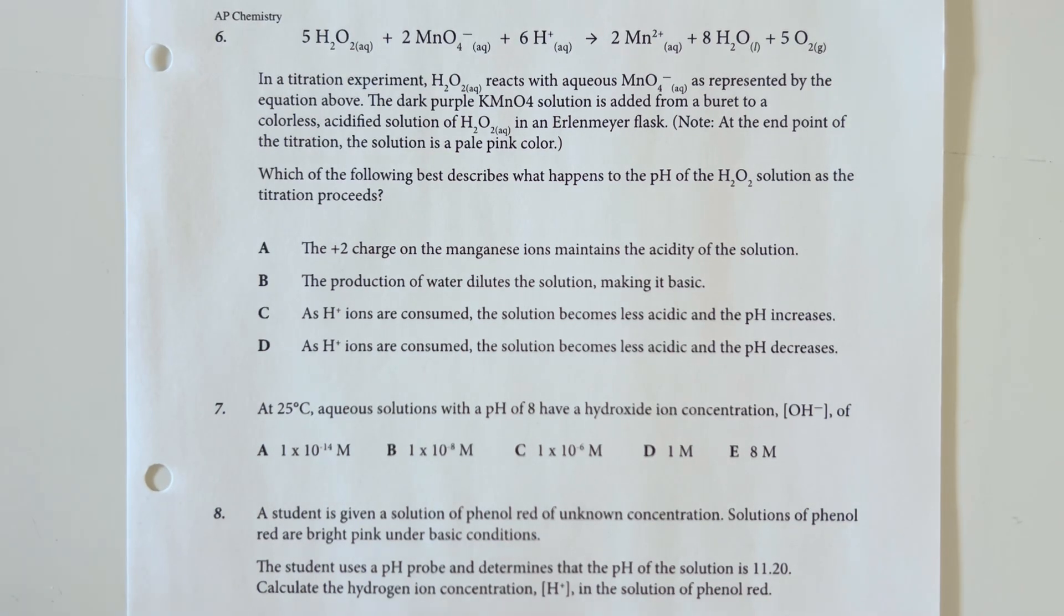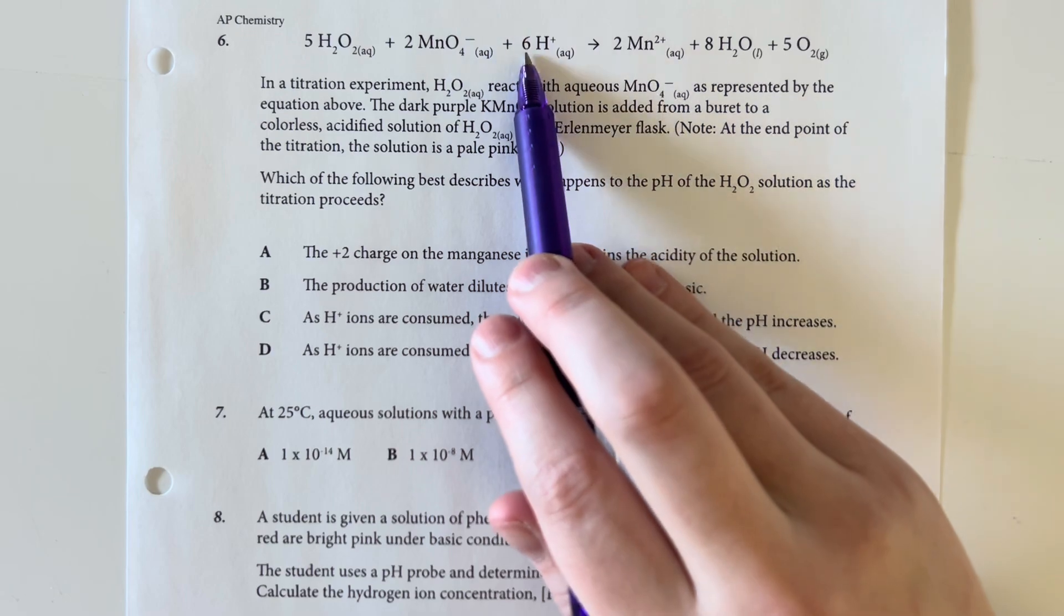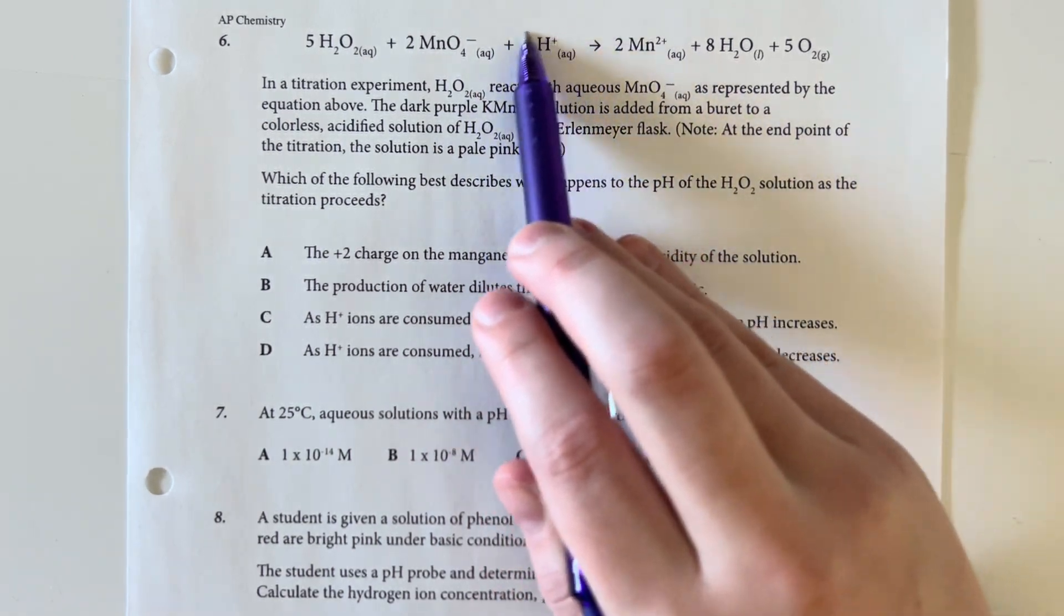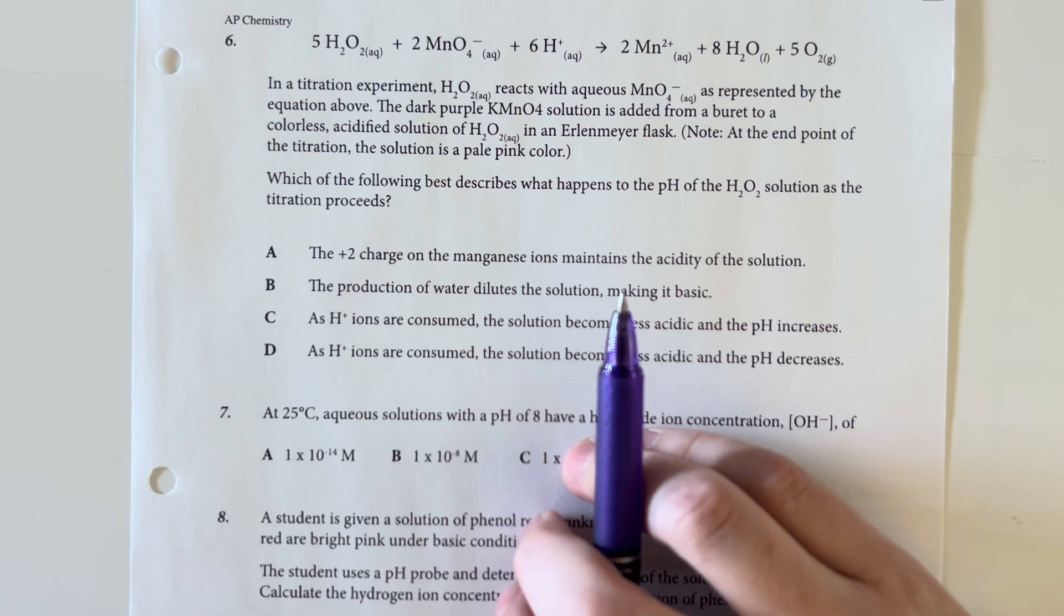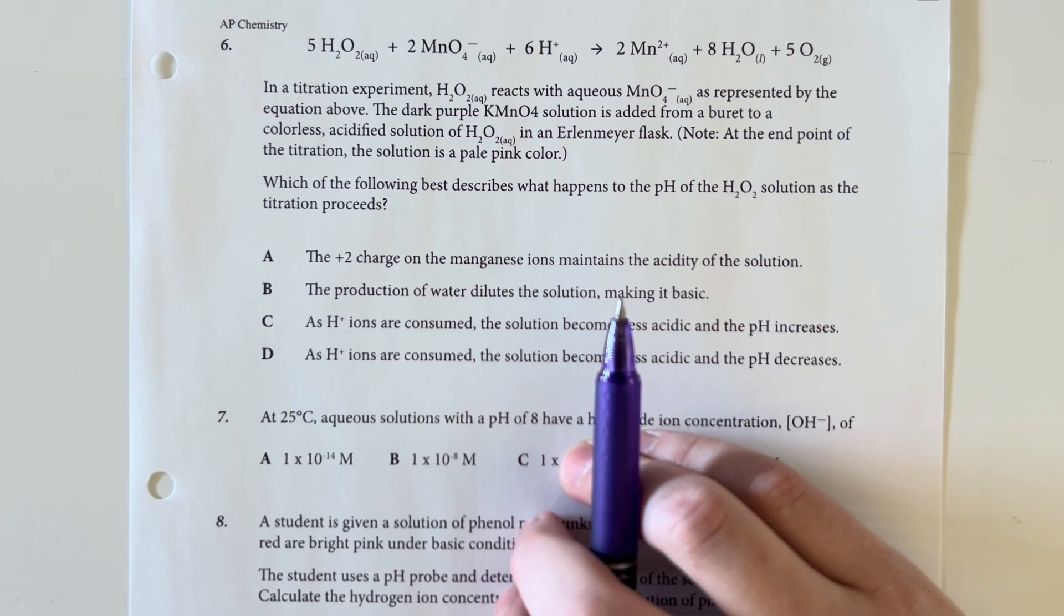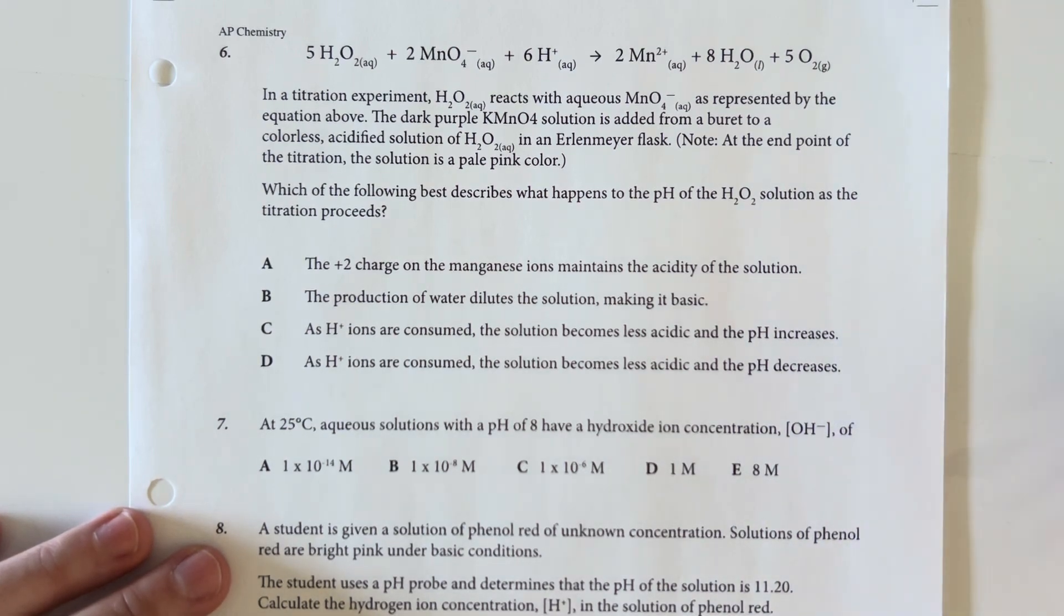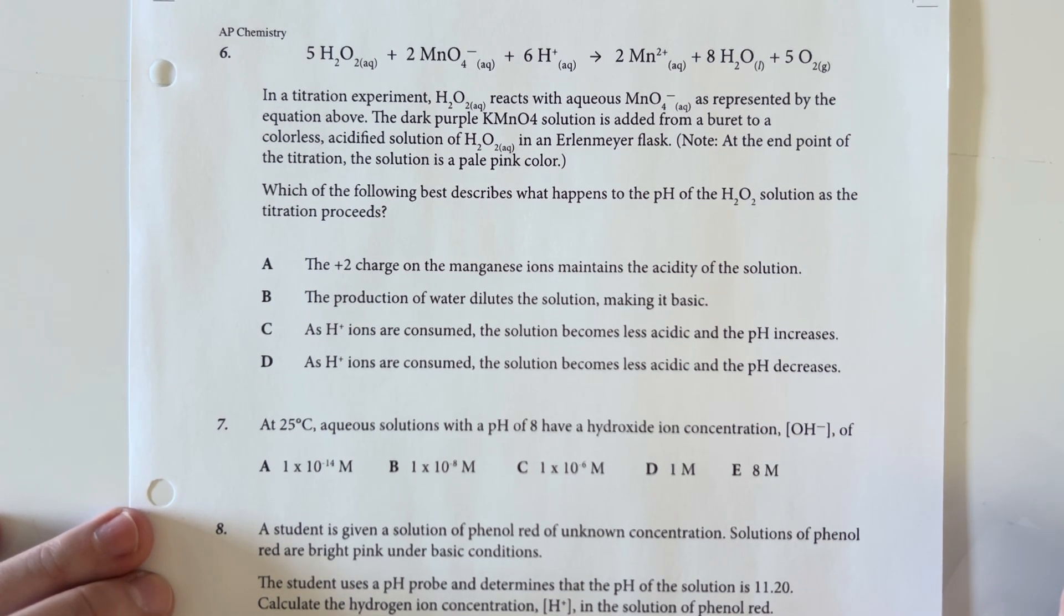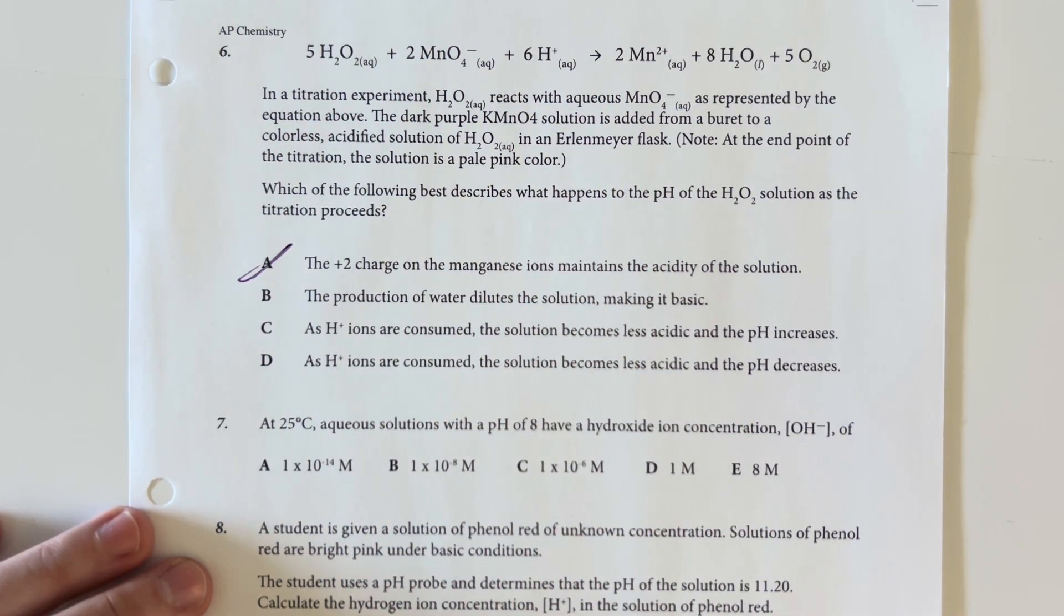So as the titration proceeds, we can see that we initially have excess of this hydronium, the hydrogen ion on the left. And then as we are going forward, that is disappearing. And so we are getting rid of our hydrogen ions and therefore becoming less acidic, more basic. And so we should find something along those lines. The charge of positive 2 on the manganese ions mandates the acidity of the solution. That is not true. We are going to change our overall acidity.